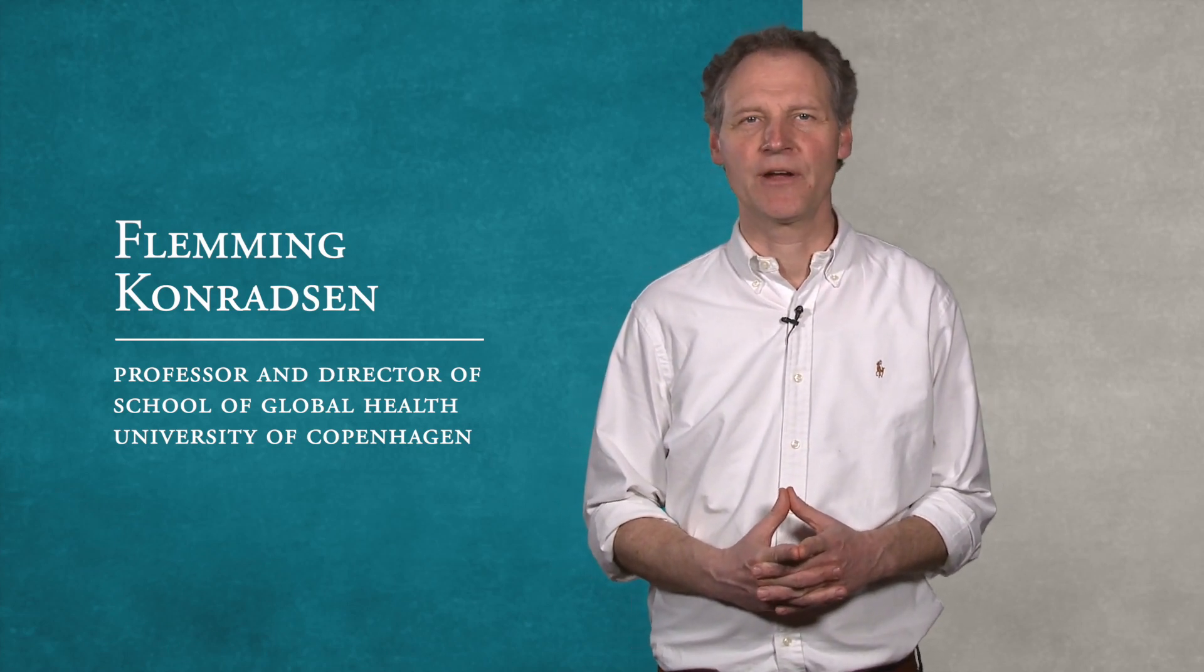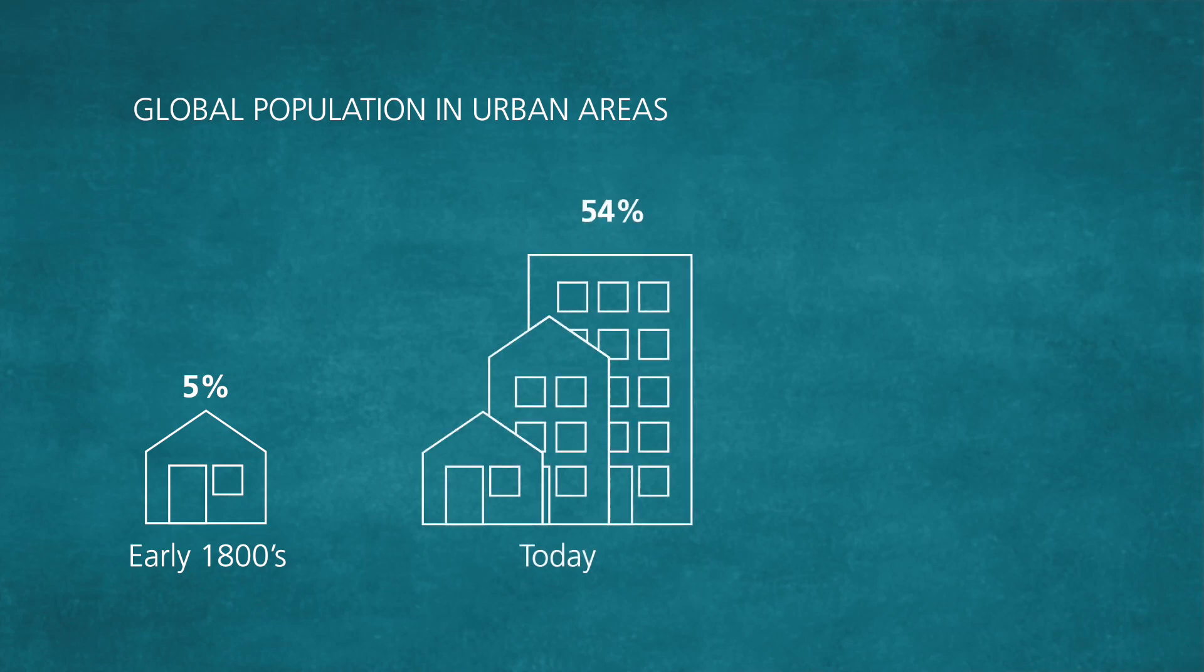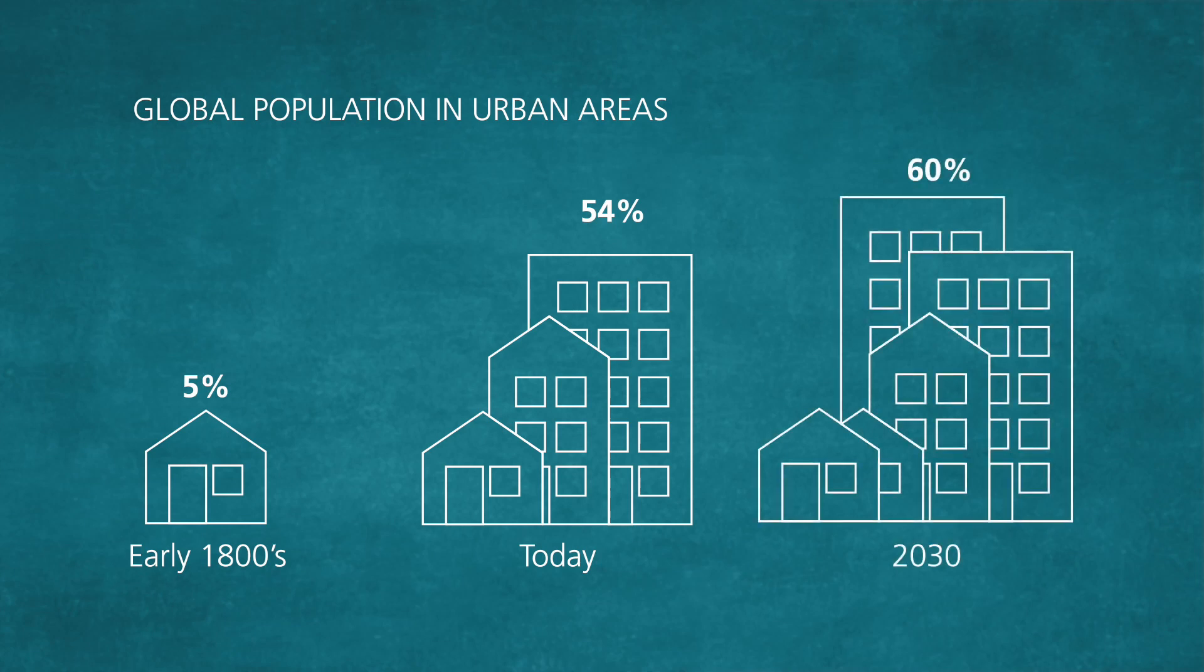In the early 1800s, less than 5% of the global population lived in urban areas. Today, the number is 54%, and according to the United Nations, the number will rise to 60% by 2030.